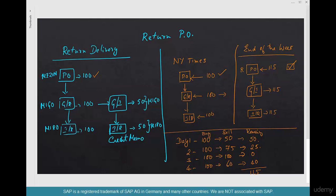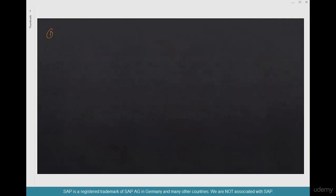Once you mark that line item as a Return PO, subsequent processes automatically adjust — it becomes a Goods Issue instead of a Goods Receipt, and a Credit Memo instead of an Invoice Receipt. So first we'll create this regular PO cycle, and second this Return PO cycle. To do that, first we create the New York Times material as Trading Goods.